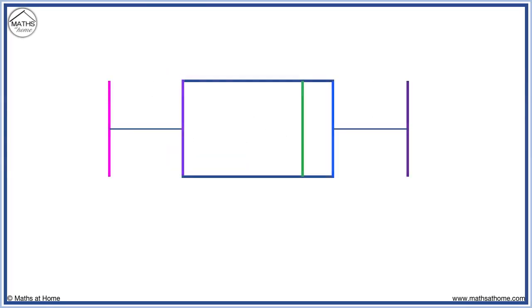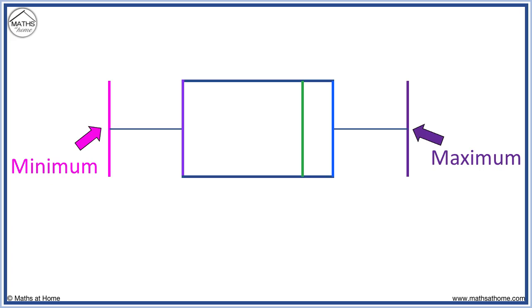Here is a box plot. We read the minimum value from the first line, and the maximum value from the last line. The median, or Q2, is found at the line inside the box.